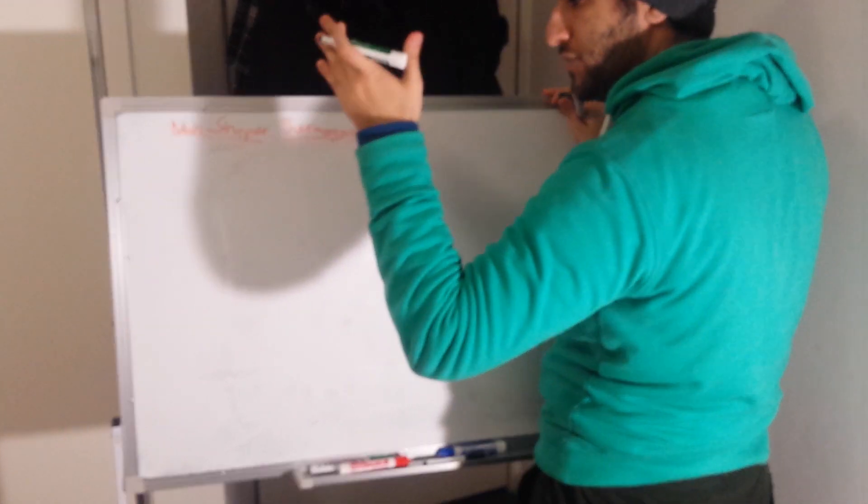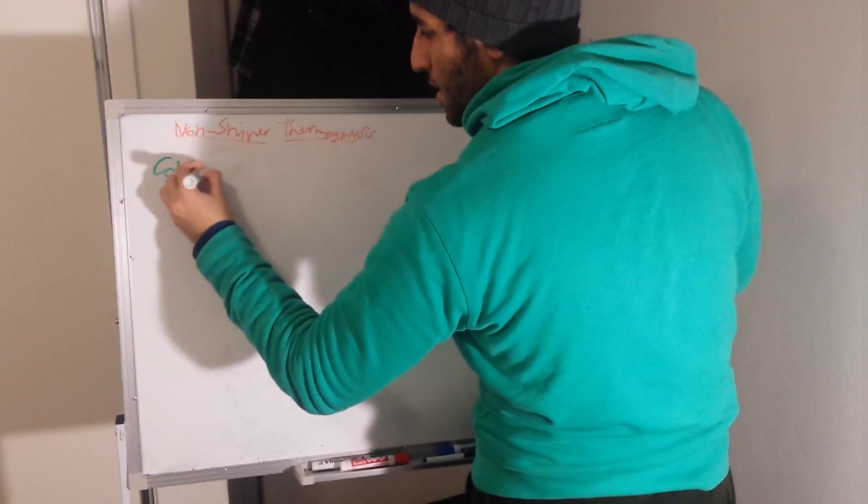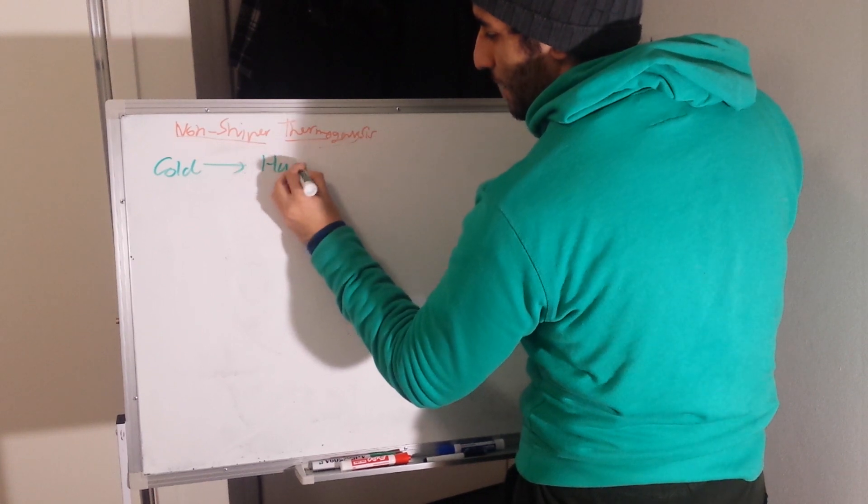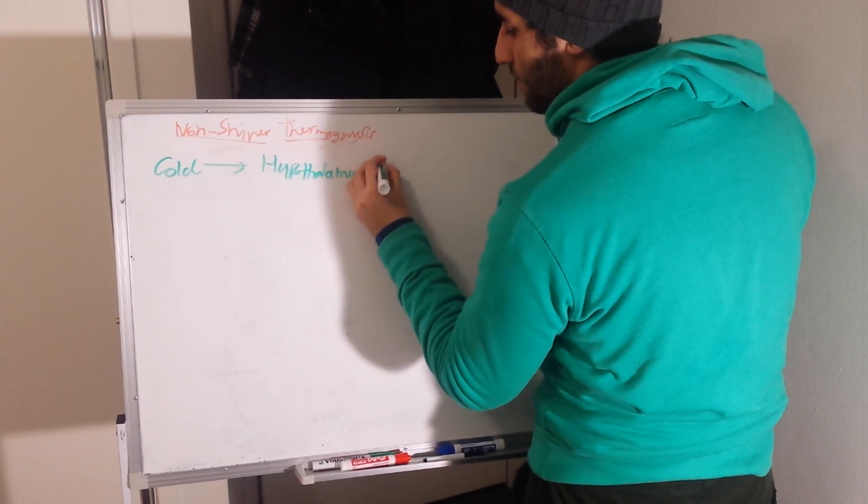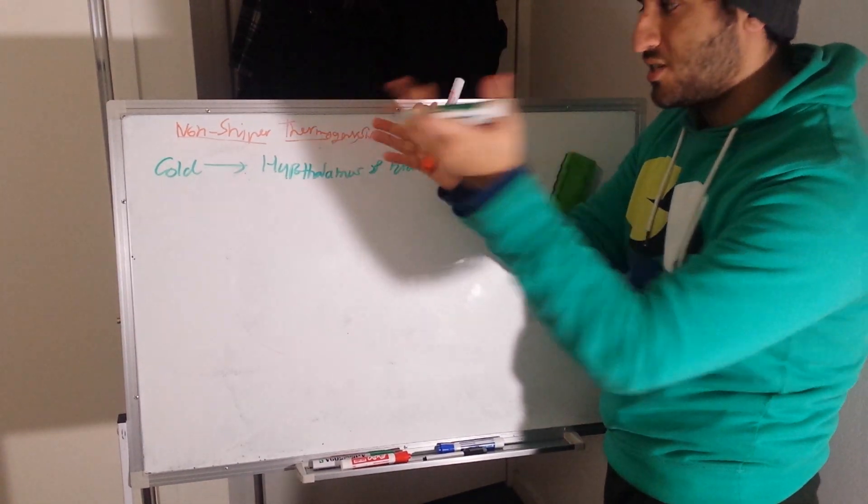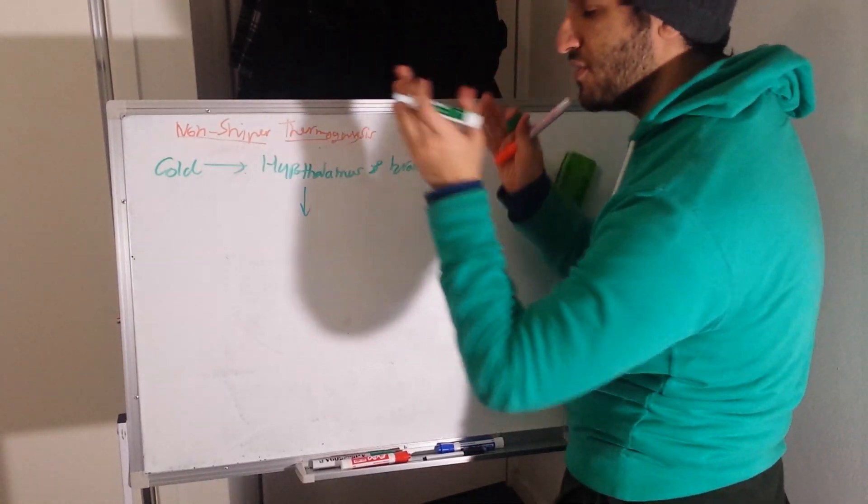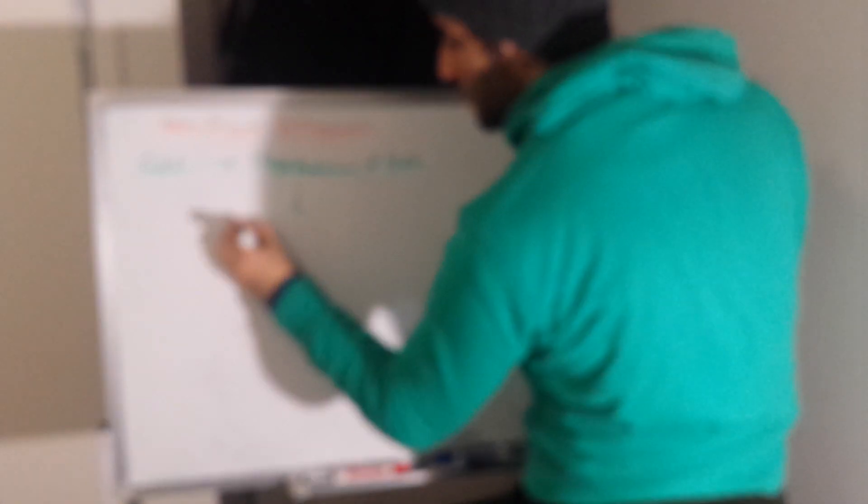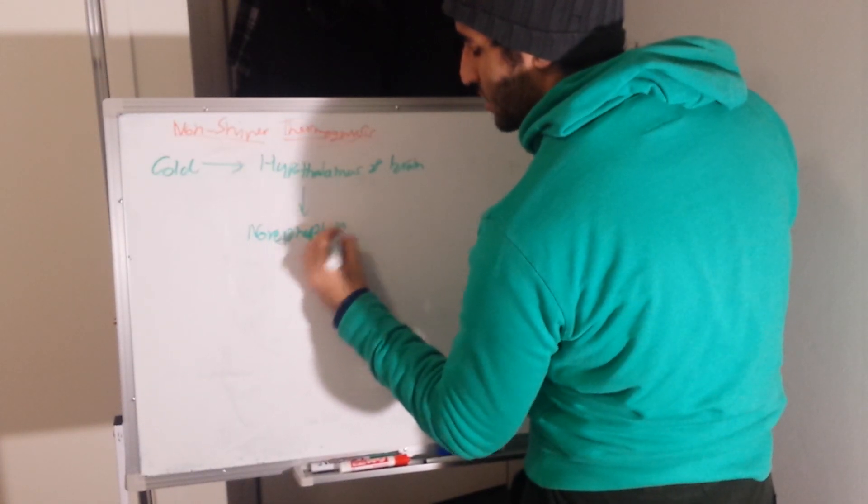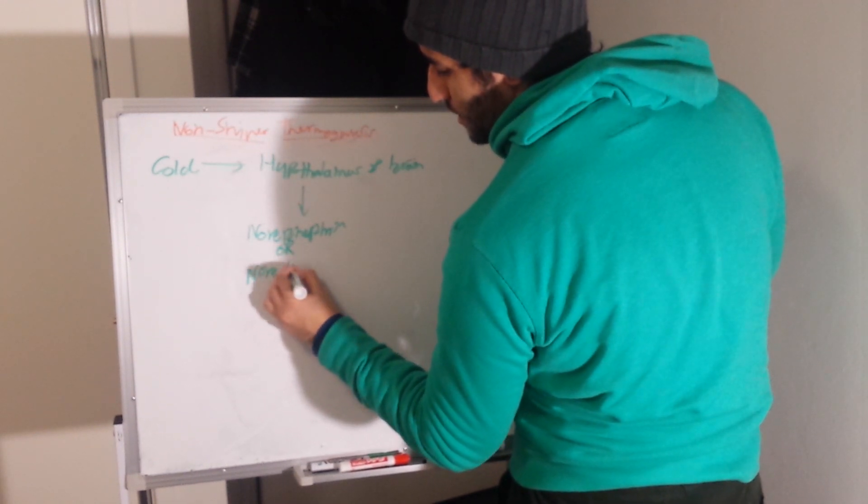Then this cold temperature as external stimuli would be sensed by the hypothalamus of your brain. The hypothalamus senses this cold temperature, and as a result it would secrete release of a specific hormone called norepinephrine or noradrenaline.